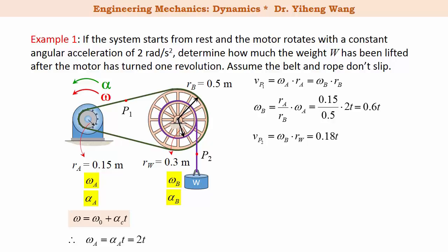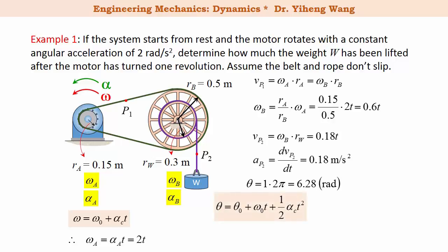The velocity 0.18t is also the linear velocity of the weight. Taking the time derivative gives a constant linear acceleration of 0.18 m/s². Since the motor has turned one revolution (6.28 radians), applying the constant angular acceleration equation gives t equals 2.51 seconds. Substituting into the constant linear acceleration displacement equation with a = 0.18 m/s² and t = 2.51 s, the displacement of the weight is 0.565 meters.